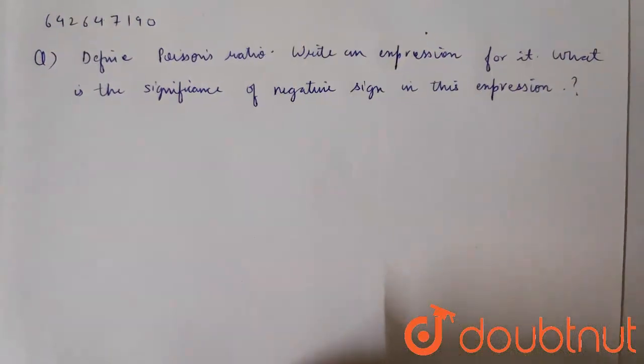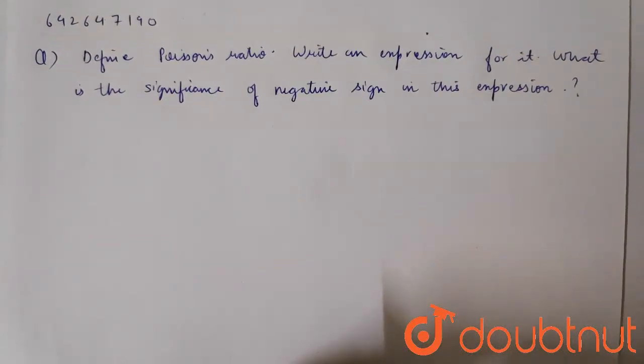The question is: Define Poisson's Ratio, write an expression for it, and what is the significance of the negative sign in this expression?